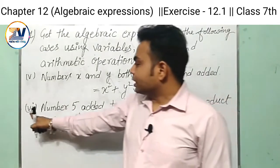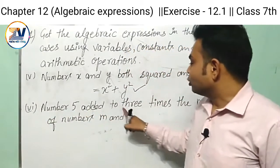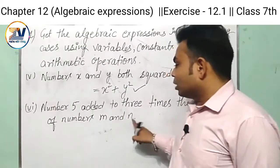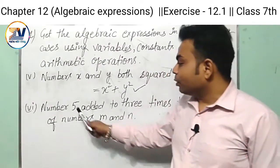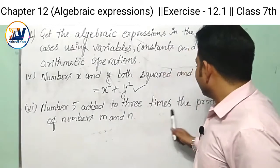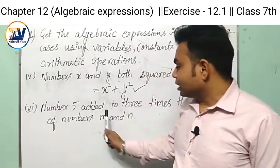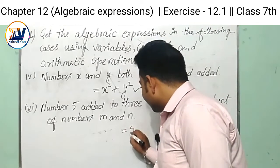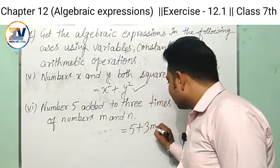Now we go to the sixth part: number 5 added to three times the product of numbers m and n. We need to add 5 to three times the product of m and n. So here 5 added to three times the product of m n, the expression is 5 plus 3mn.